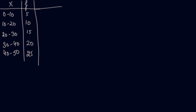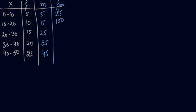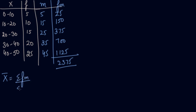Now let's understand using mean. First of all, we will find out the mean. We have to calculate the mid values: 5, 15, 25, 35, 45. We used to multiply the frequency with the mid values, getting: 25, 153.75, 700, 1011.25. We add these to get 2375. So x̄ = summation of f×m divided by summation f. Your summation f is 75, so 2375 divided by 75 gives an answer of 31.66.